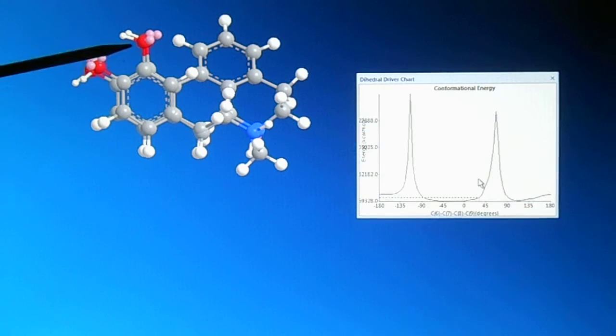This alpha-rotamer, which is shown and mimicked very well by apomorphine, is the shape of dopamine that behaves as an agonist at its receptors. So, the alpha-rotamer is really important.